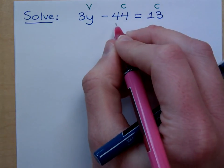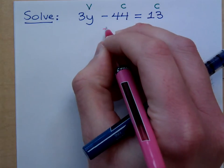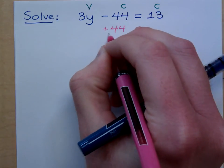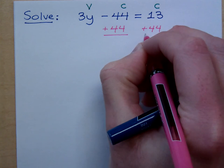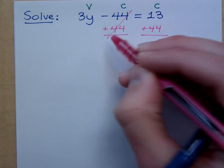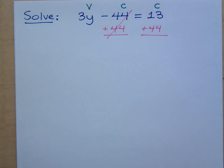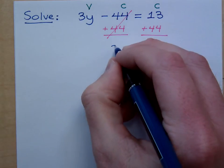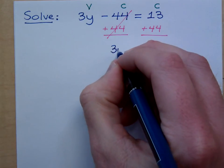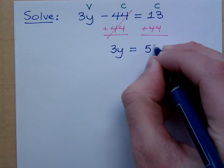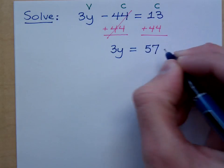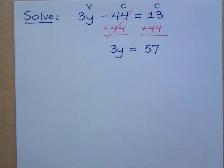So how do I move the 44 to the other side? I'm going to add 44 to both sides. So this gives me 0 — that's what I want. On the left side, all that I have is 3y. What's on the right side? 57.